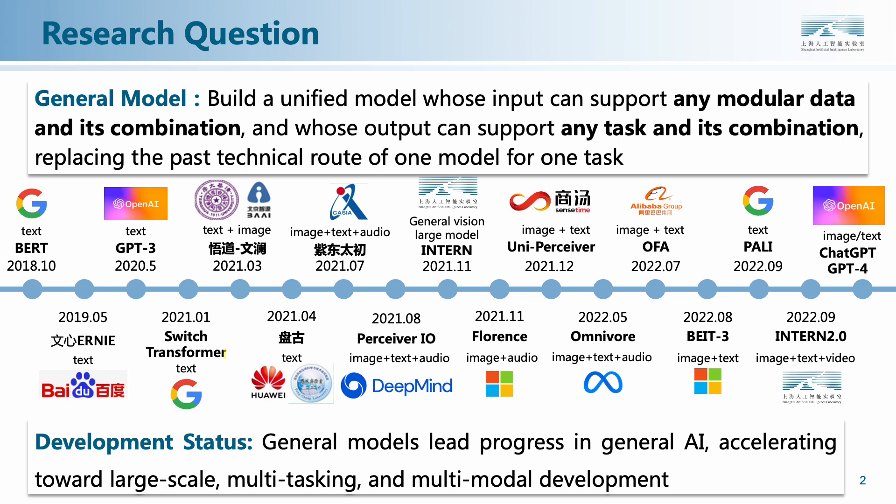Generic models have gradually moved towards large-scale, multitask and multimodal starting from BERT in 2018. In recent years, top research institutions represented by Google, OpenAI, MSRA and Facebook have released large generic models for multitasks, achieving better results on downstream tasks than the traditional specialized model technology route.